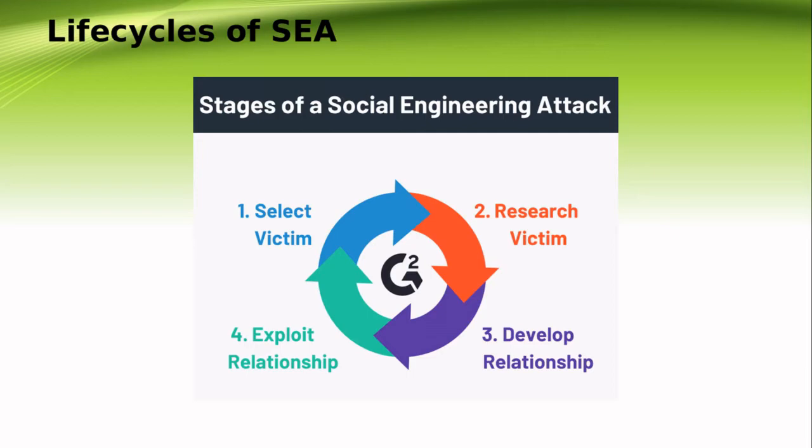The third step is developing a relationship. This involves the development of rapport and trust with the target. The target is more likely to divulge requested information to an attacker if they trust them. According to the book written by Mitnick and Simon (2002), rapport and trust development can be done by using insider information, misrepresentations, identifying those known to the victim, showing a need for assistance, or occupying an authority role.